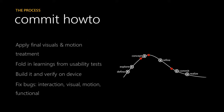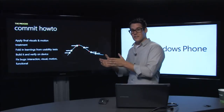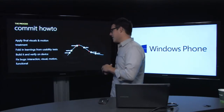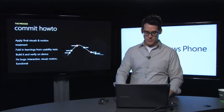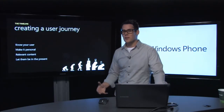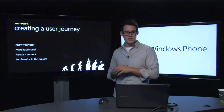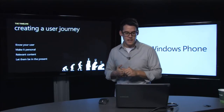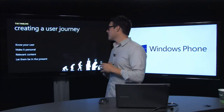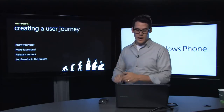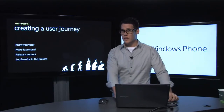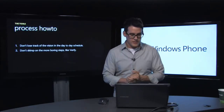In the design studio we used a poster that talked through the different phases. You have wireframes that start out pretty early, then final visual comps mostly done in Photoshop. You create redlines — speccing so the developer knows the actual dimensions of each screen. Then dev coding, and one of the things we always did in the design studio is design integration. My title was Design Integration Lead. We always revisited every single screen and made sure they were pixel perfect — this is the blood, sweat, and tears phase. Then test and validation to make sure your code works. Apply final visuals and motion treatment. Fold in early learnings from usability tests. Fix bugs — interaction, visual, motion, and functional — and most importantly, know your user, make it personal, have relevant content, and let them be present in the application.